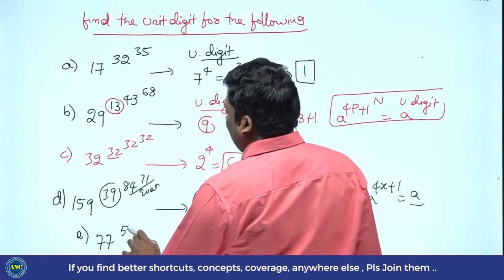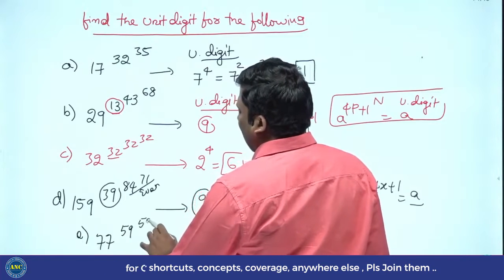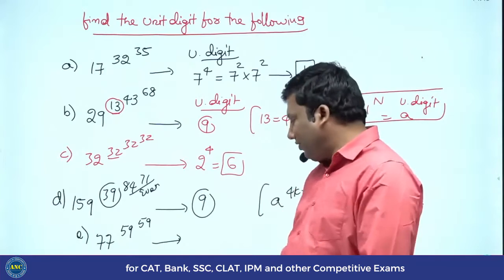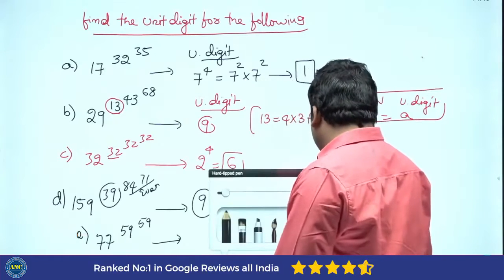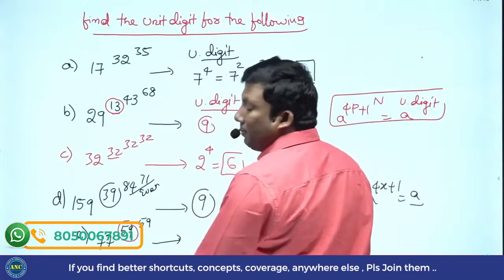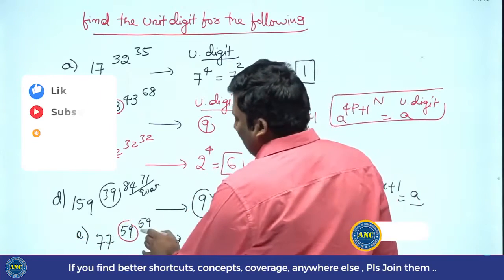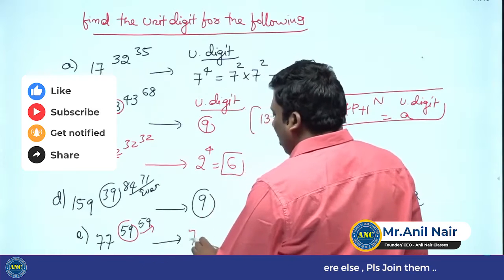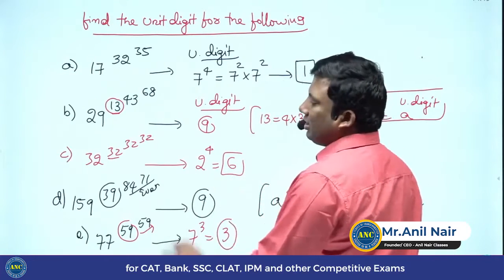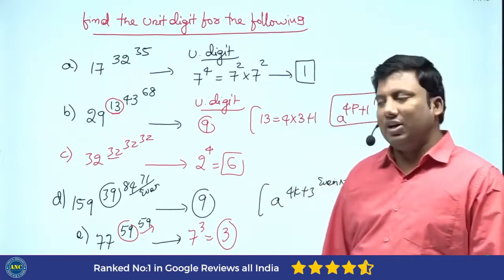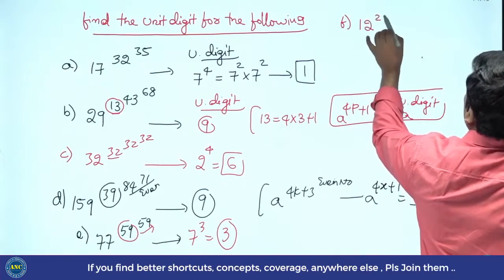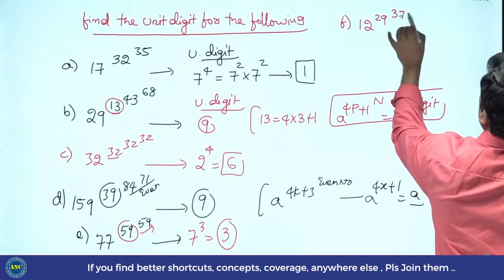4k plus 3 to the power even: 3 squared is 9, divided by 4 gives remainder 1. So A power 4x plus 1 gives A. A is the unit digit of 159, which is 9. Answer is 9. Next: 77 power 59 power 59. 59 = 4 into 14 plus 3, so it is 4k plus 3 to the power odd. When N is odd, I get A cubed. 7 cubed is 343, answer is 3.